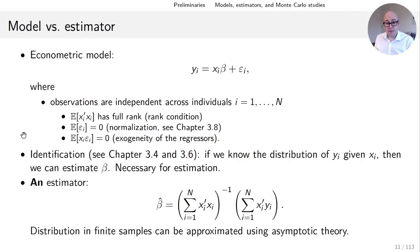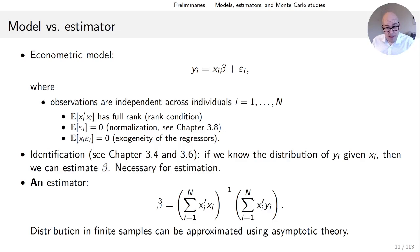The entire first bullet point describes the econometric model. The way to think about this is that the data we have and analyze have been generated by this model — we assume the model is correct.